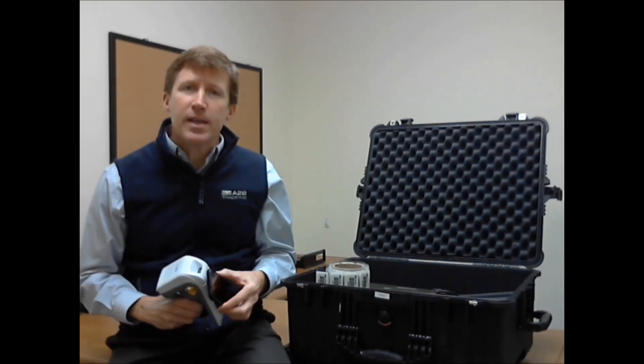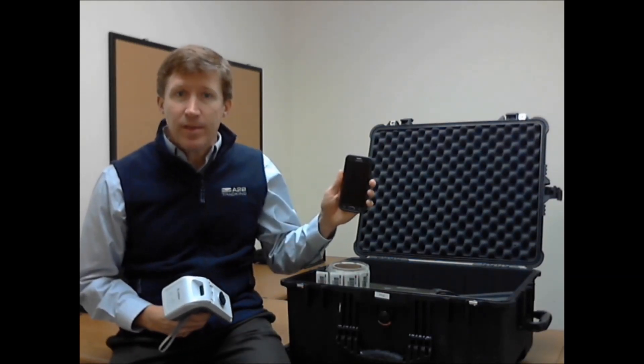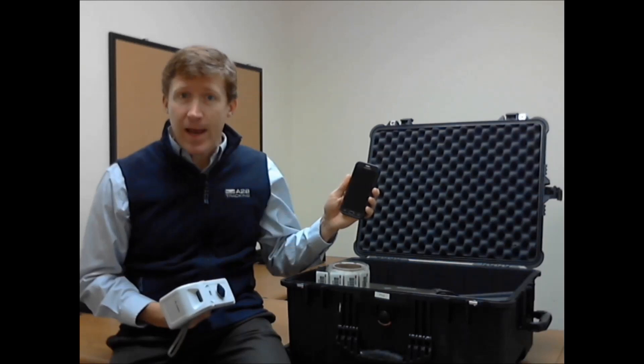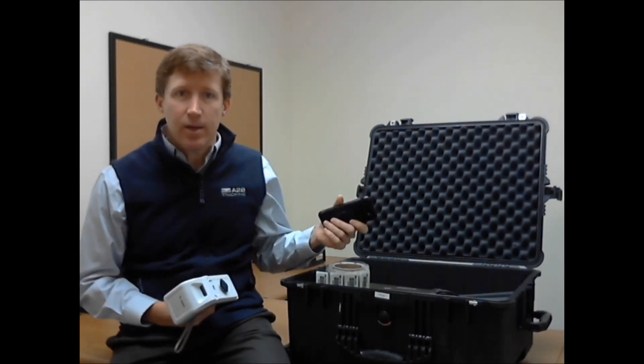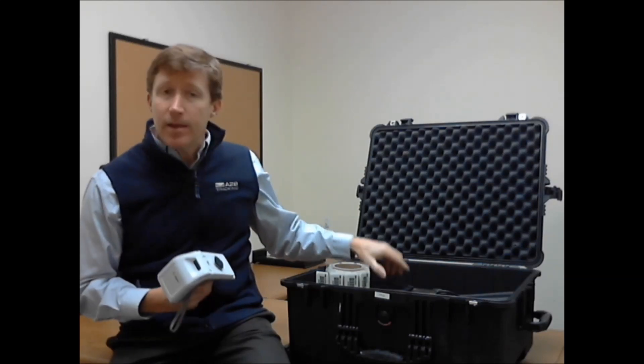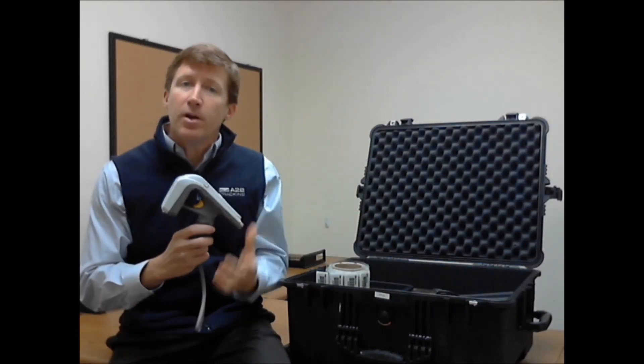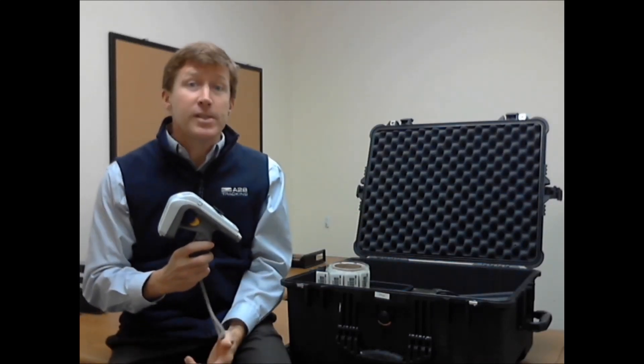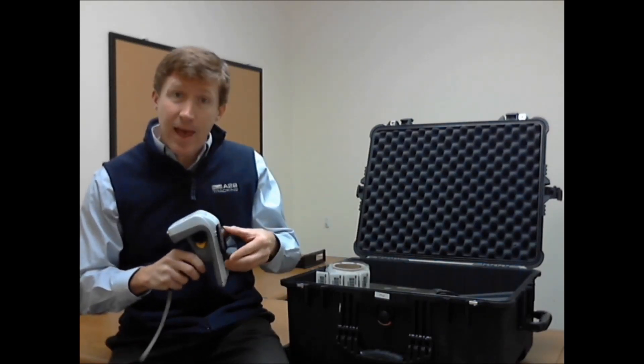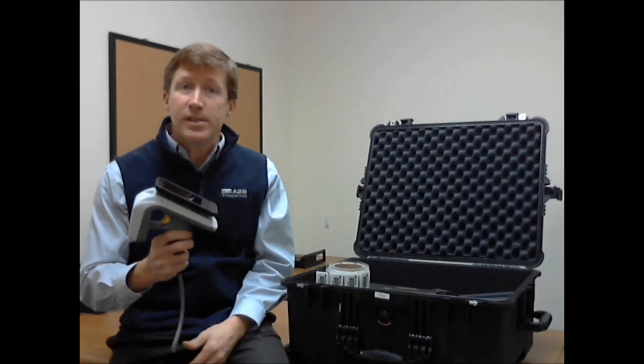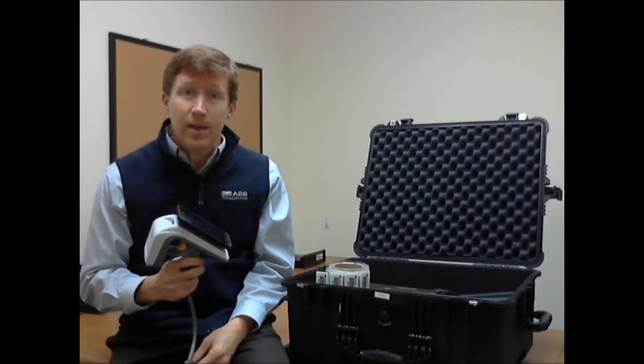There are three simple components to this. The first is the use of a smartphone that's Android that allows you to download the A to B tracking app and connect it to the cloud where all the asset management will take place. The second is a Zebra RFD 8500 sled which connects directly to the smartphone and the app to allow you to turn this into a powerful RFID mobile computer.